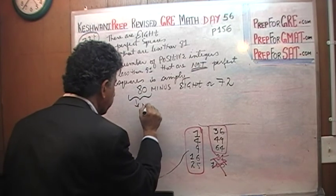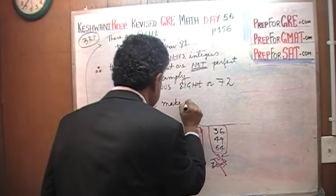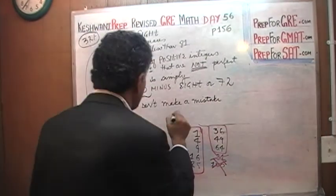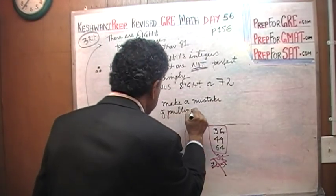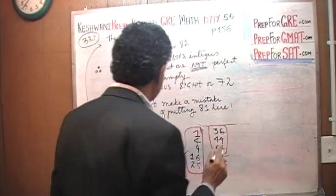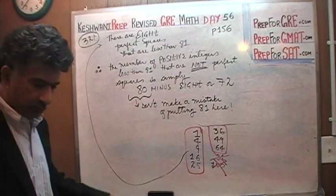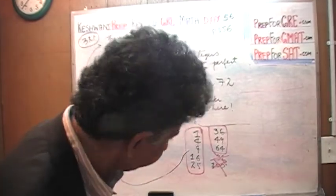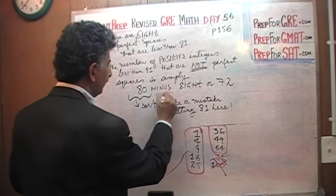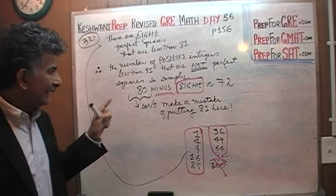I am going to make a note here — don't make the mistake of putting 81 here. If you end up putting 81, you are going to say 81 minus 8 and end up with 73. It is 80 minus 8.